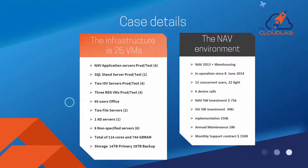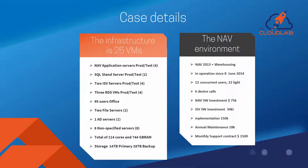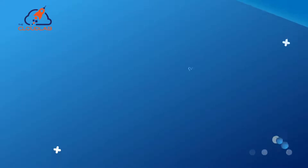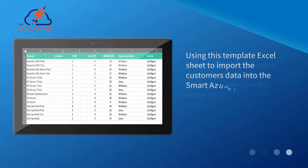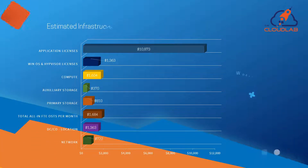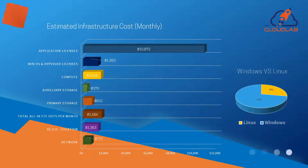Here is a typical NAV 2013 customer with 25 VMs, including NAV, SQL, RDS, and a couple of workloads. Use the template Excel sheet to import the customer's infrastructure data into the Smart Azure Calculator. After importing the Excel, the rest of the customer data is entered.